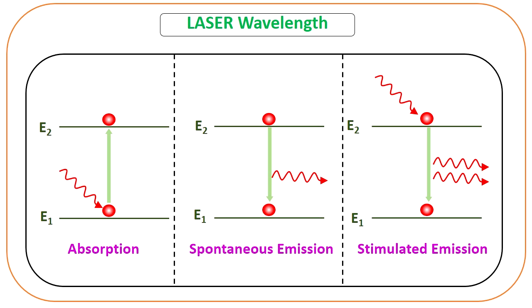For spontaneous emission, if the electron has gained some energy from the ground state and goes to a higher excited state, when this atom comes back to the ground state, it will lose one photon. This is spontaneous emission — the emission happens spontaneously without any external source.